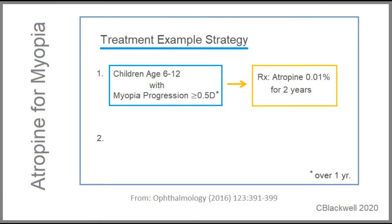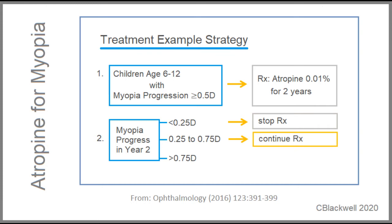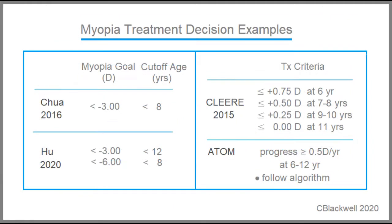Another treatment strategy is based on rate of progression, as suggested in the 2016 ATOM paper. Children aged six to twelve with myopic progression of half diopter or more per year would start on atropine 0.01% once daily for two years. At the end of the second year, their response would decide whether to continue. If response is good — less than a quarter diopter progress in year two — atropine could be stopped. If response is moderate — one quarter to three quarter diopters — then continue the drops. If response is poor — progress greater than three quarter diopters — then they are not likely to respond to the atropine and the drops could be stopped. These are examples of different criteria of when-to-treat decisions. Such treatment decisions are reached jointly between the eye doctor and the family.